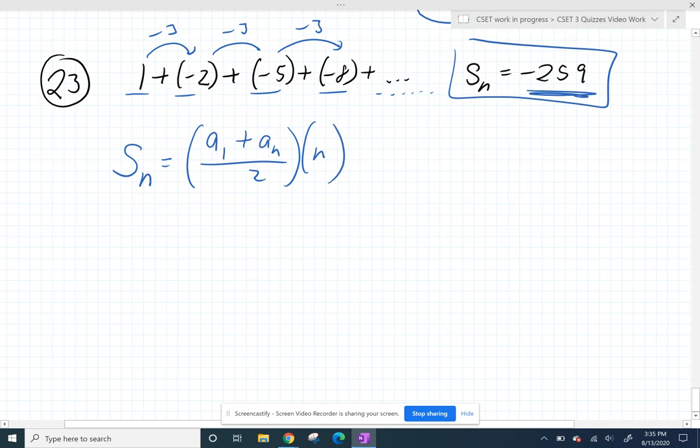It's the average of the first and the last terms times the number of terms you have. So let's plug and chug. That's a great strategy for math. I know S sub n is negative 259. I know my first term is a1. And oh, crap, I don't know my last term.